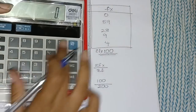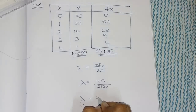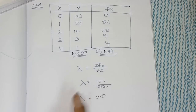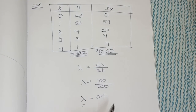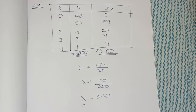100 divided by 200 gives lambda = 0.50. To do Poisson distribution, you need to take the Poisson distribution table into your examination — it is allowed in the examination. You don't need to worry about that.